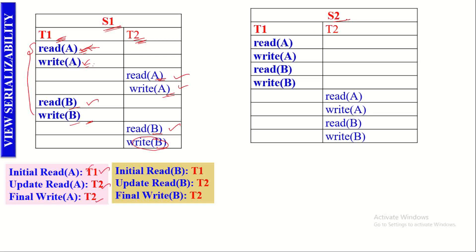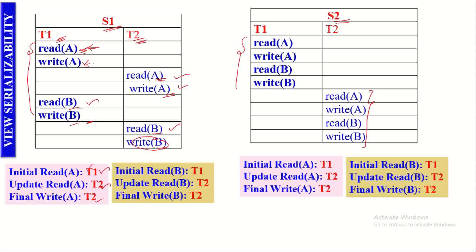Here is the serial schedule of this non-serial schedule. How did we get this? We simply arranged all the operations of T1 first, and after that we arranged all the operations of T2. This schedule is a serial schedule because there is no overlap between the execution of operations in T1 and T2. So we now have to observe initial read, update read, and final write on both the data items.